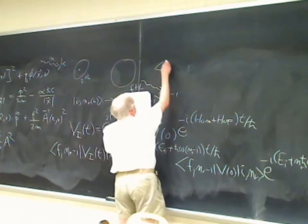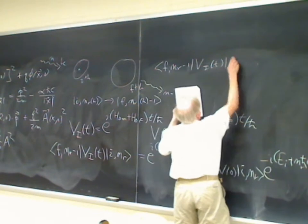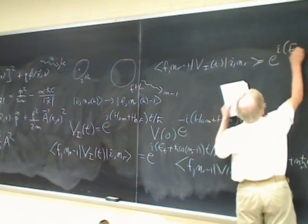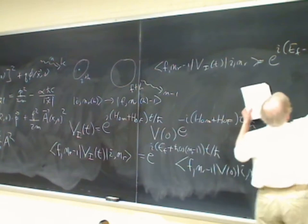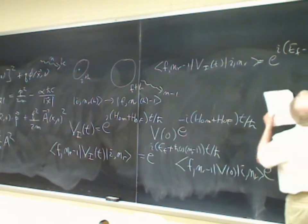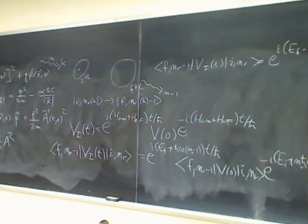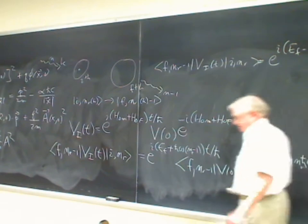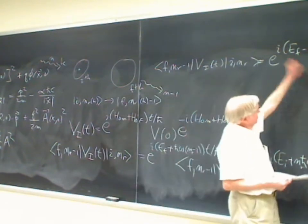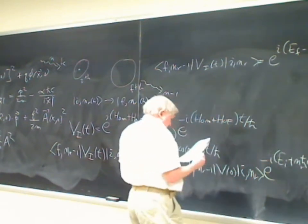So the matrix element <f, n-1 | V_I(t) | i, n_{r,k}> has simple time dependence e^{i(E_f - E_i - h-bar omega_k) t / h-bar} times <f, n-1 | V | i, n_r>. When you're on resonance there's no time dependence at all, because the energy of the photon exactly equals the difference in energy levels.